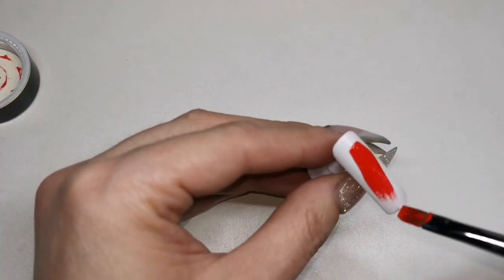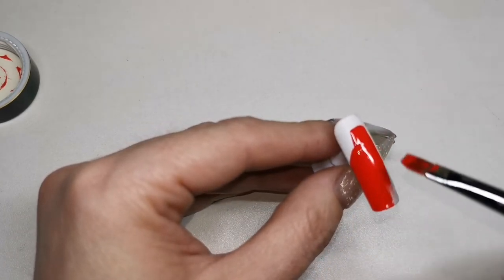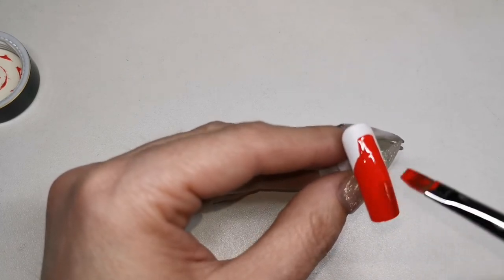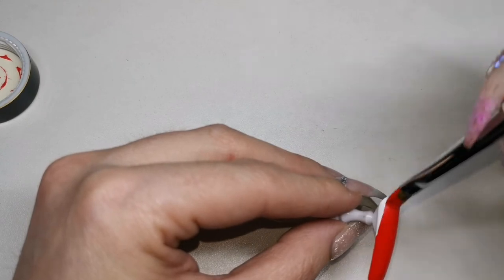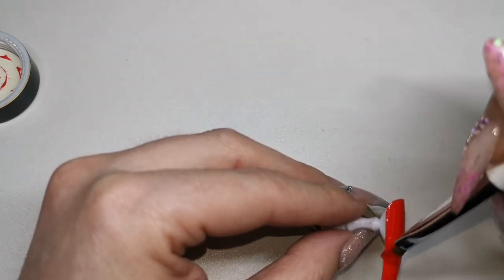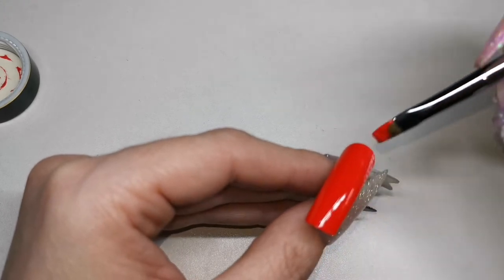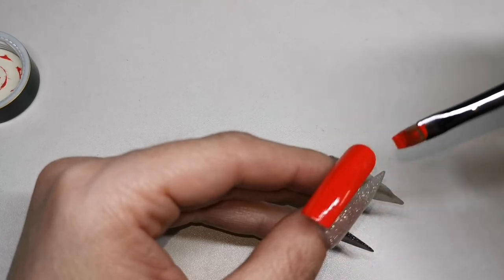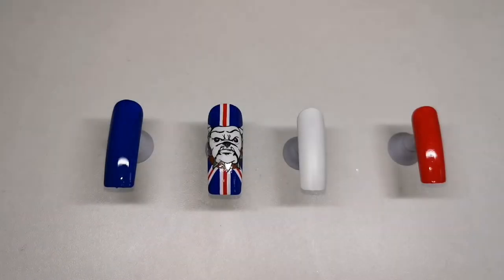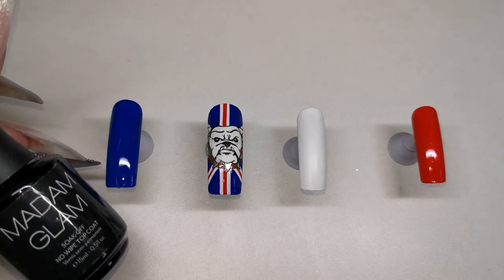Again I'm going to go over this one with the red gel paint just so it all matches. I could have used Grand Canyon for this but side by side it is slightly, very slightly darker, so I thought just use the red gel paint. That cures for 60 seconds. All right guys, now they're all ready to be top coated so I'm going to use the Madame Glam no wipe shiny top coat.